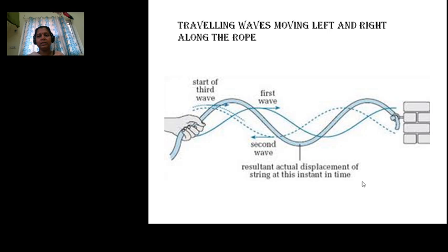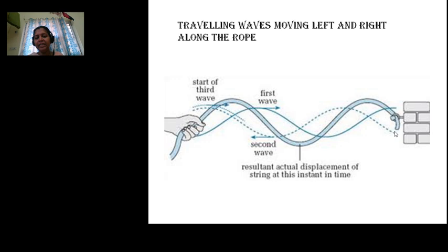Now today we are going to discuss about stationary or standing waves. We know that a traveling wave is generated by moving the string up and down. Once it reaches a rigid support, the wave acquires an additional phase of π — so a crest becomes a trough. The second wave propagates in the negative x direction. For a free end, the wave pulse suffers no phase change.